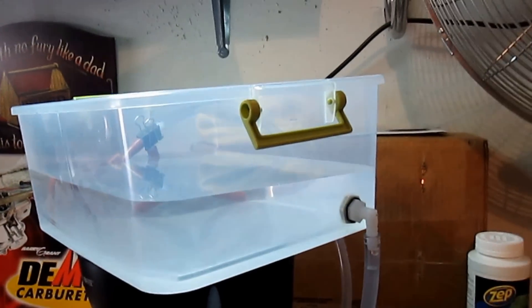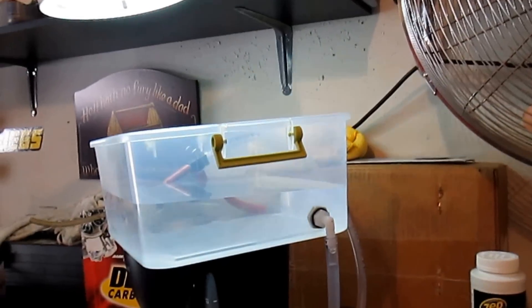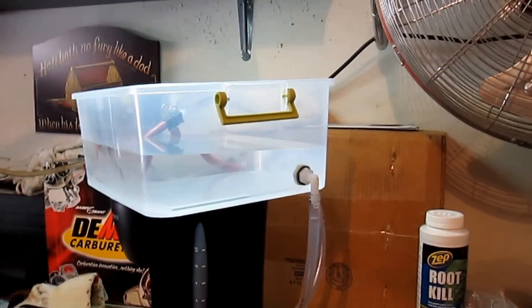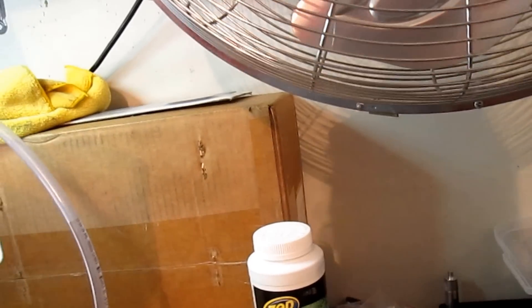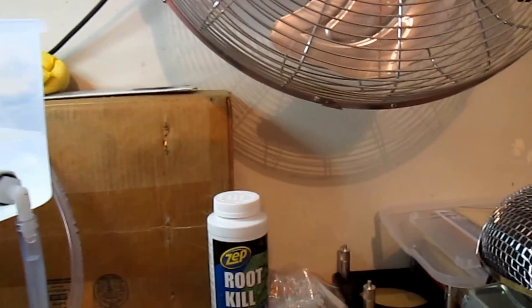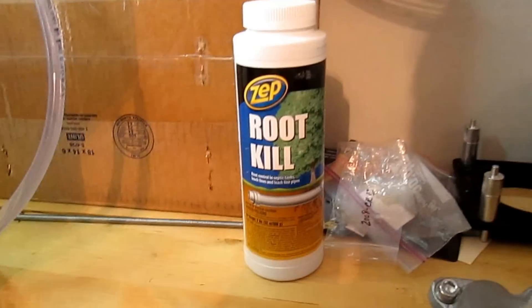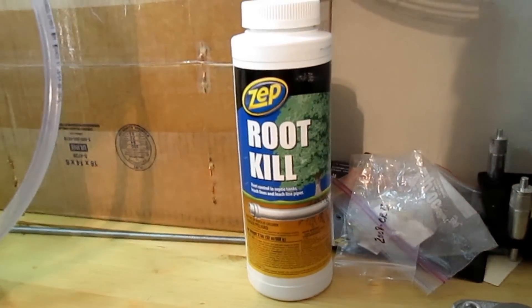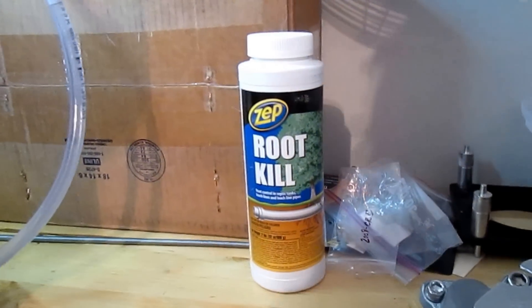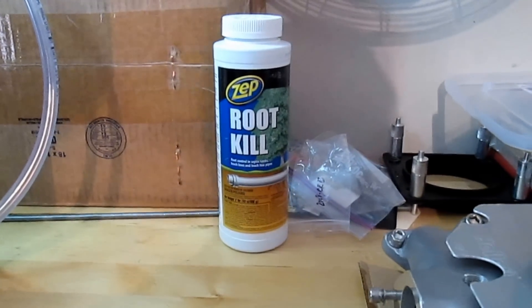First thing we're going to do is coat some of our lead bullets with copper plating. Instead of going to the chemical supply company to get our copper sulfate, we've got this stuff called root kill. We've got that over in the plumbing section of the hardware store, about 10 or 12 bucks.